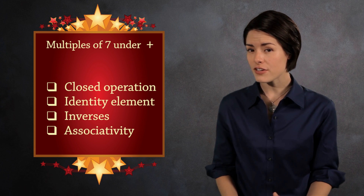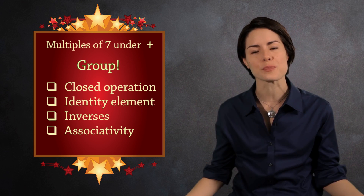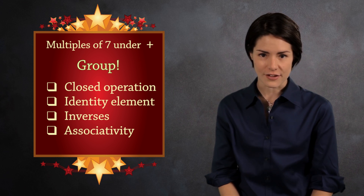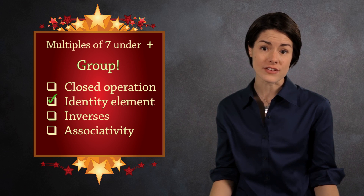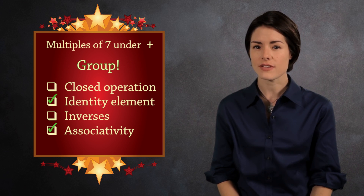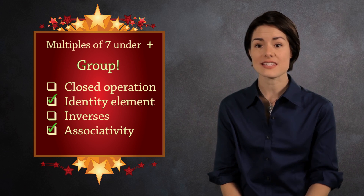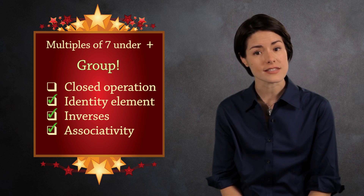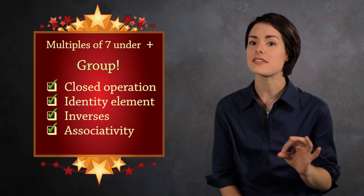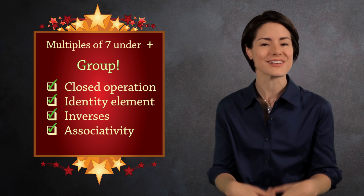All multiples of seven under addition? Yes, you're right — this is a group. Remember, seven times any integer is a multiple of seven. And zero is a multiple of seven, since it is seven times zero. In fact, zero is a multiple of everything. We have associativity because these are integers, after all. An arbitrary element of this group can be written as 7x, and the inverse of this is seven times negative x. And lastly, if you add two elements, 7x and 7y, you get seven times (x + y), which is also a multiple of seven.